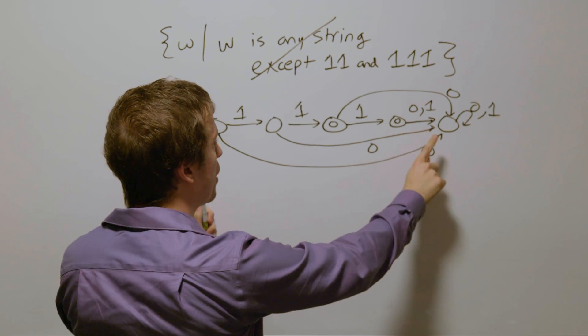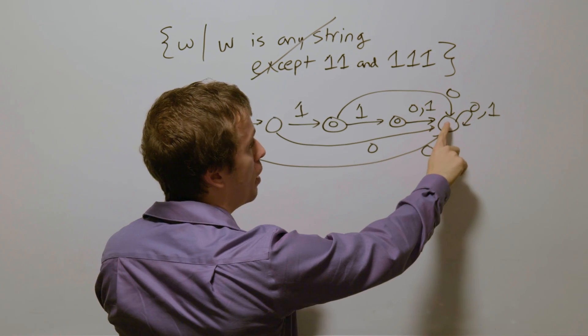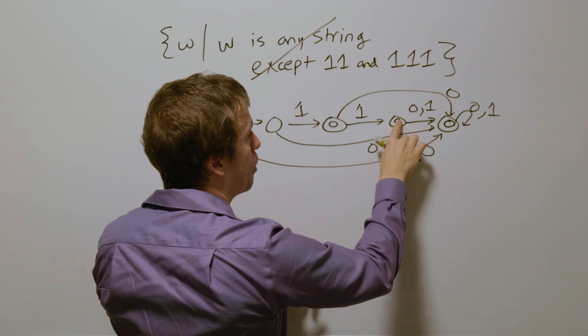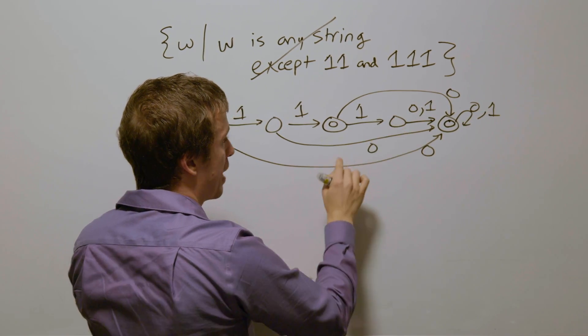So all that we need to do is flip which states are final and non-final. This one was not final before, I'm going to make it final. This one was final, so I'm going to make it not.